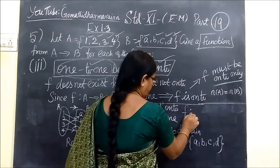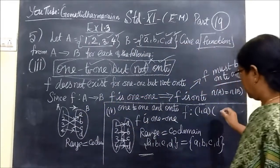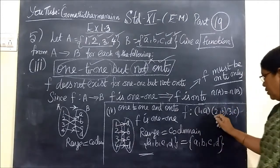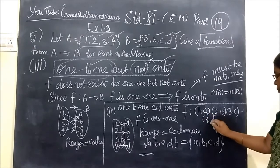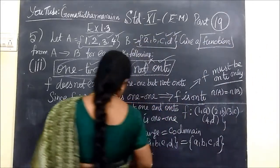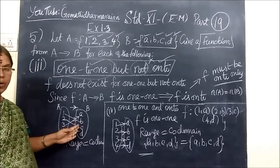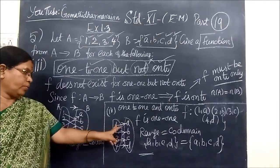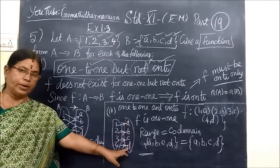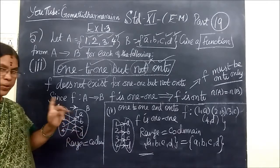So here you have to write f. Then 1 to A, 3 to C, then 4 to D. You can take it in another way also. See, this is also one-one function. So in the way, 1 to A, 2 to B, 3 to C, 4 to D.